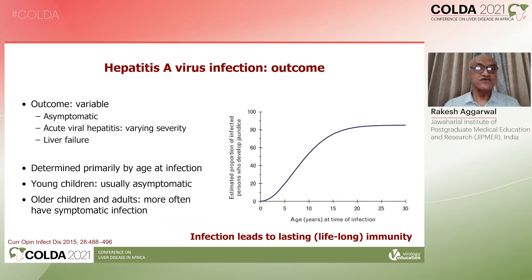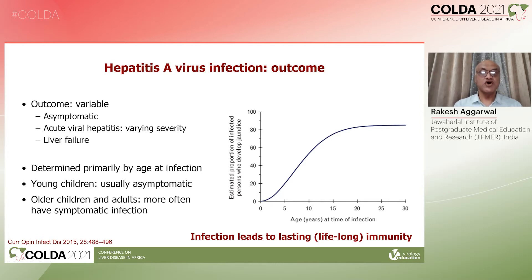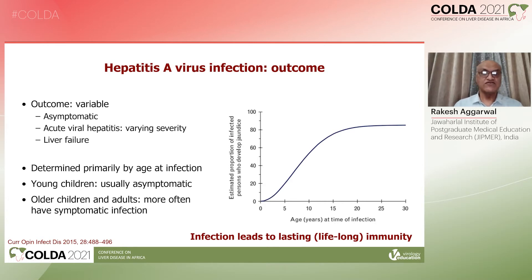Once infection occurs, the outcome can be very variable — from an entirely asymptomatic infection to the most commonly recognized form, acute viral hepatitis, where jaundice occurs and lasts for a few days to a few weeks. This can vary from mild to moderate to severe, and a small proportion of those infected develop fulminant liver failure, which is a serious illness that needs hospitalization and can be fatal.